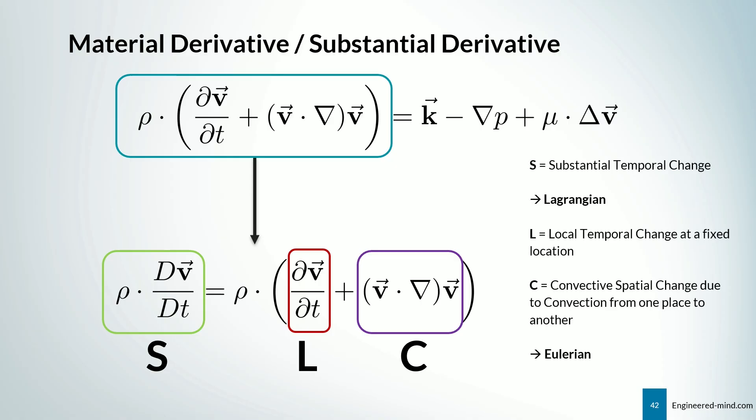So here again, this is the substantial temporal change, which is nothing else a Lagrangian approach. And on the right-hand side, we have the local temporal change at a fixed location, plus the convective spatial change due to convection from one place to another, which is nothing else than the Eulerian frame.